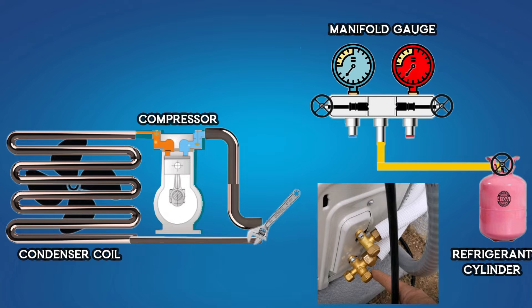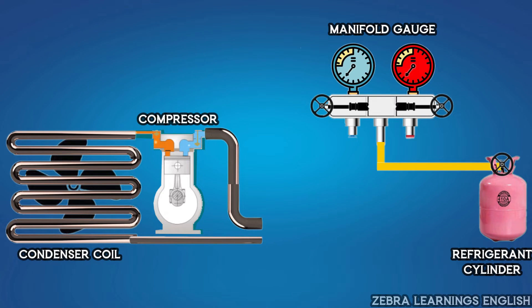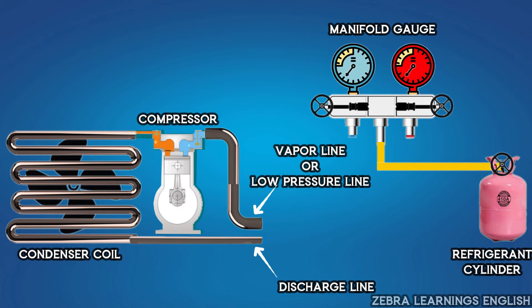Then, connect the low-pressure hose from the manifold gauge to the suction line. The larger size coil is the suction line and the smaller size coil is the discharge line. Suction line is also known as vapor line or low-pressure line. Discharge line is also known as liquid line or high-pressure line.